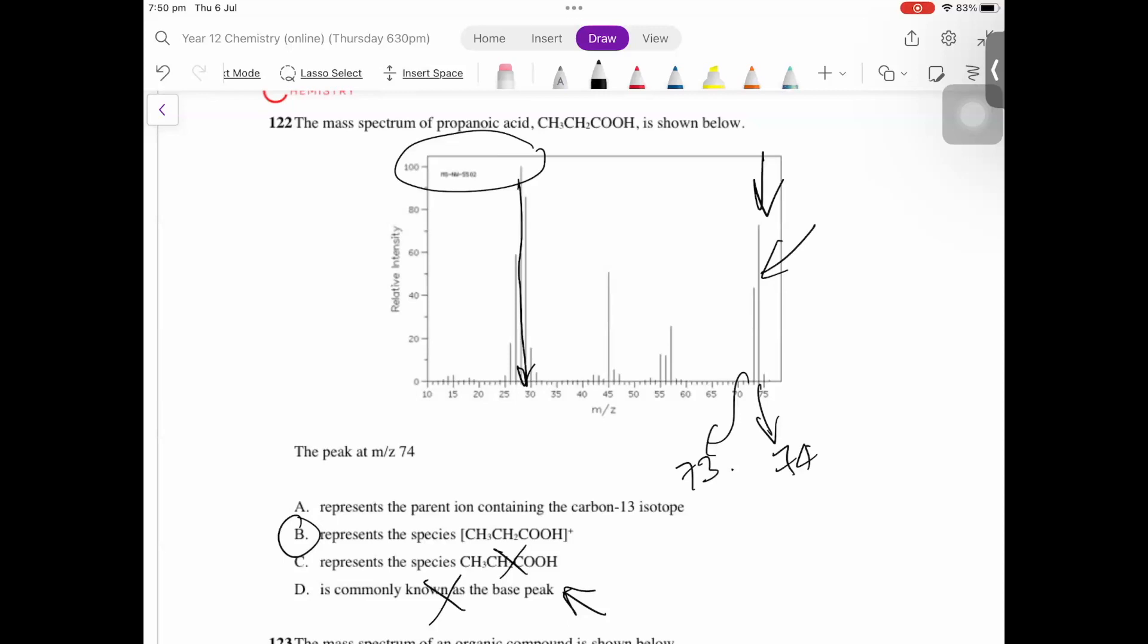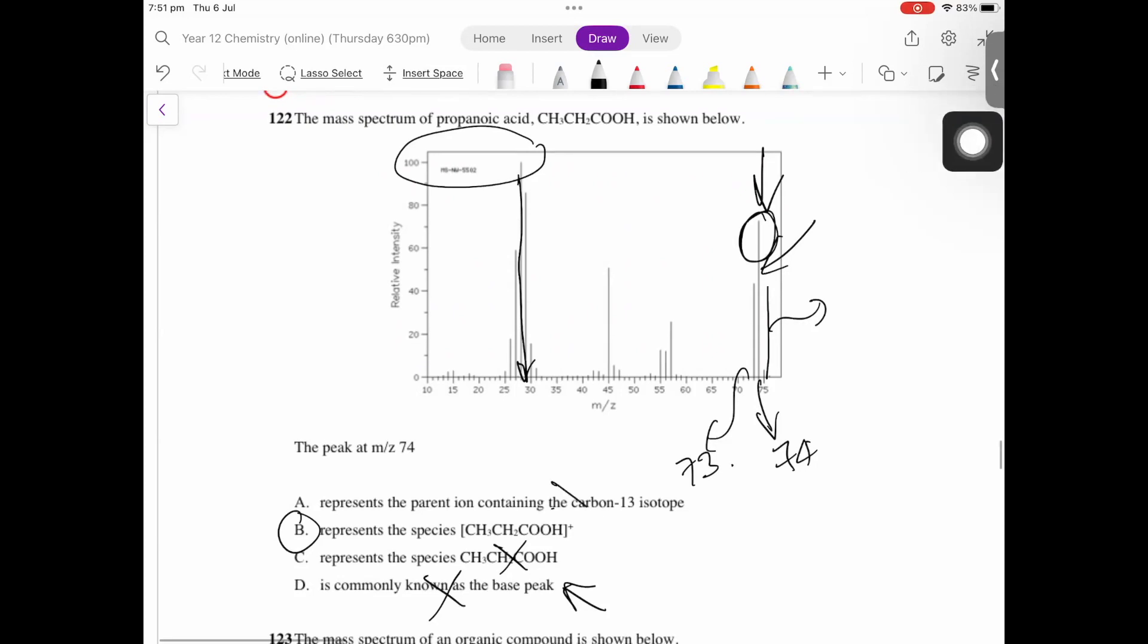Carbon-12 is more common than carbon-13. So if there was a peak right here, you might say that that's carbon-13, but this one is more likely to be carbon-12. The chances of that higher peak being carbon-13 is very unlikely because carbon-13 isn't a very common isotope. Carbon-12 is the one you see more. So A is not going to be the answer.